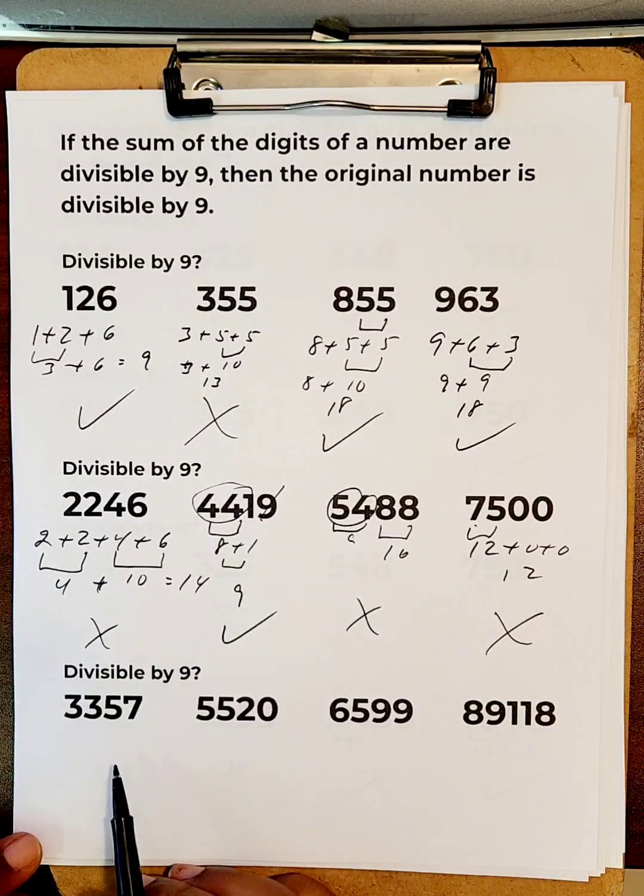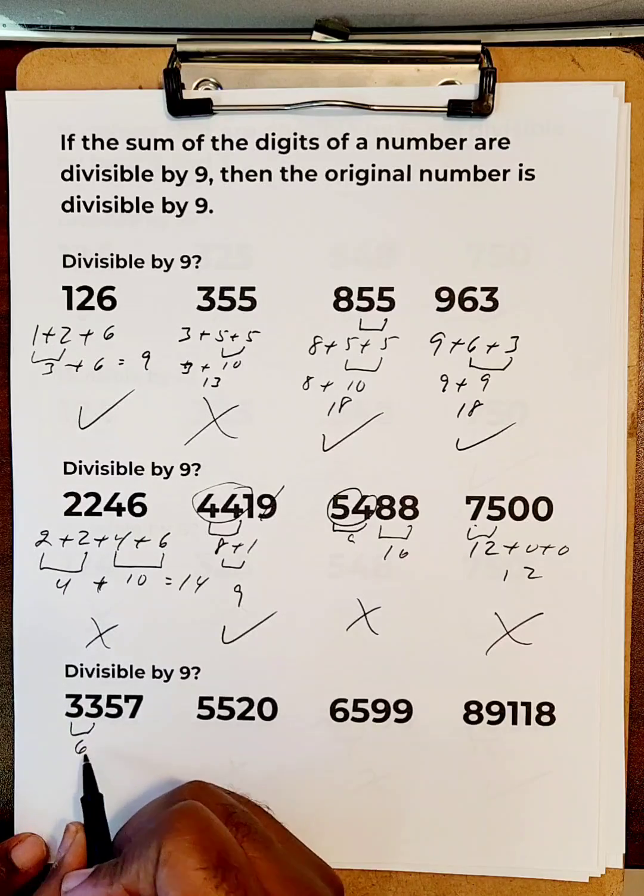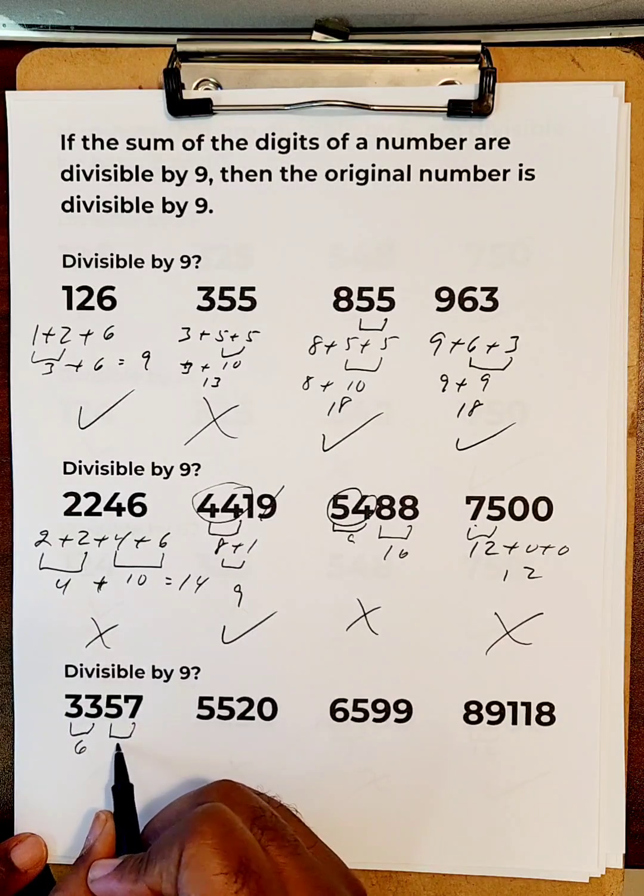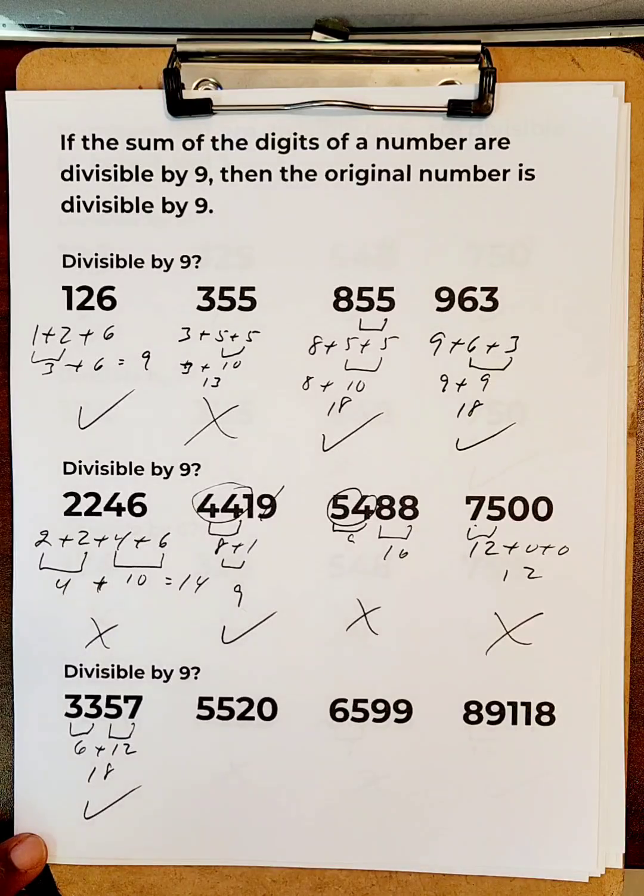Here, let's try 3 plus 3. That's 6. 5 plus 7. That's 12. Add these two, you get 18. And yes, that's in the 9 timetables.